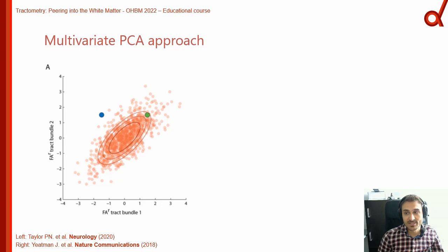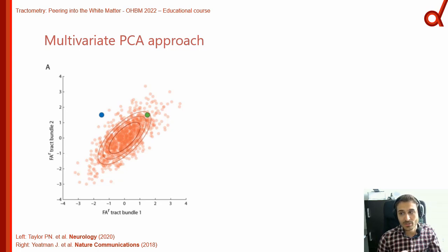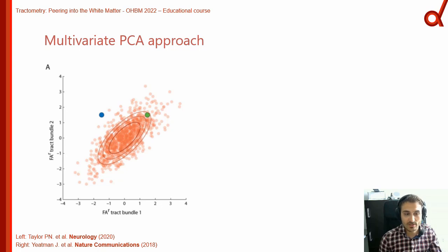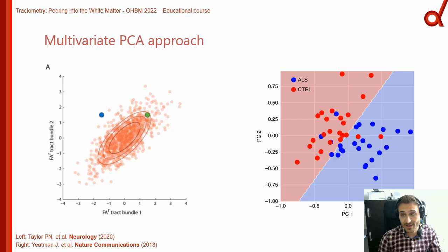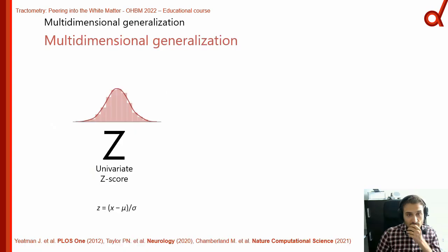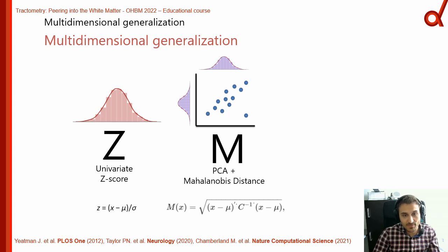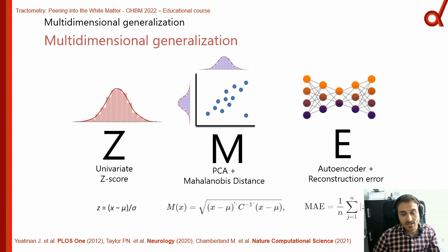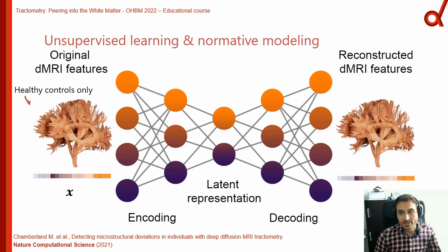A generalization of the z-score for multi-dimensional analysis is the Mahalanobis distance, which can be used in combination with PCA — for example, to detect outliers by looking at how far a specific point falls outside the range, or to train a classifier to cluster controls from patients in a new latent space. We can also use deep learning to perform outlier detection using a deep normative model, since having enough data for supervised learning is a real challenge in neuroimaging, especially with rare diseases.